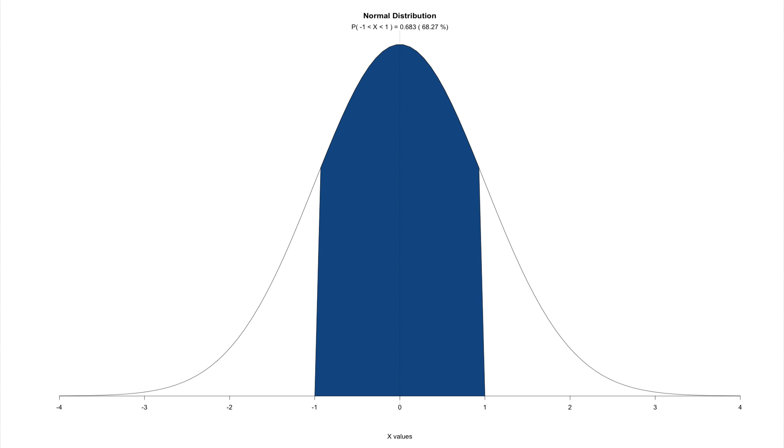So all of this shaded area, this blue shaded area, would be 68% of the curve, and then the remaining 32% would fall on the left and the right side of that, beyond the tails.